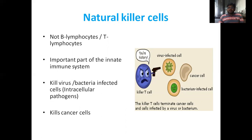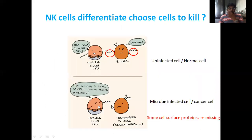Natural killer cells are not B-lymphocytes or T-lymphocytes — they are an important part of the innate immune system. They kill virus- and bacteria-infected cells, as well as cancer cells. They distinguish infected or cancerous cells to kill, and do not affect uninfected or normal cells. If your cells are infected or cancerous, natural killer cells will destroy that particular cell.